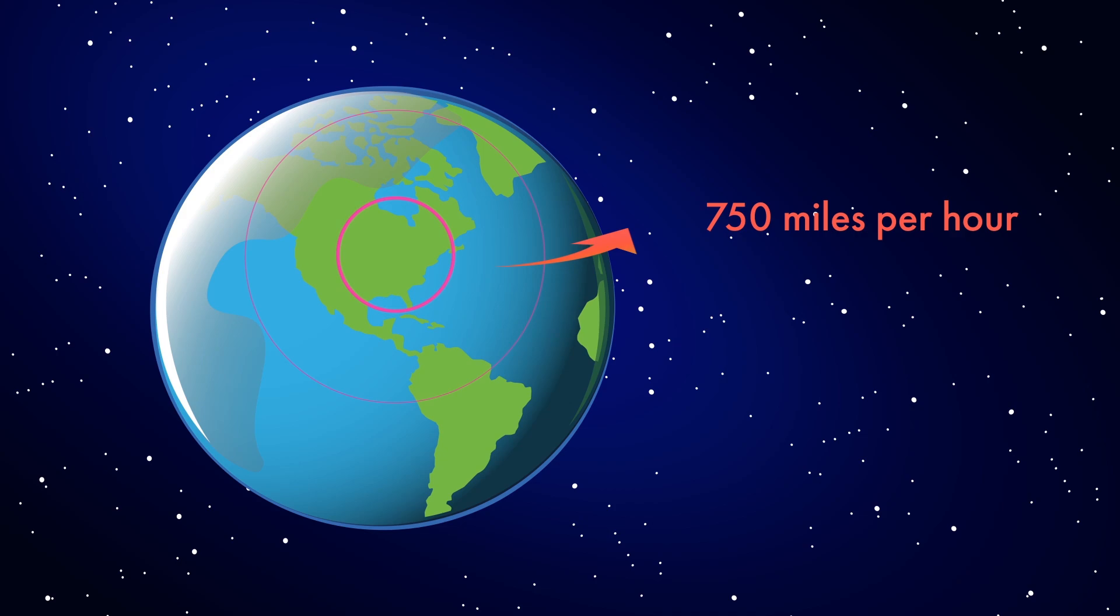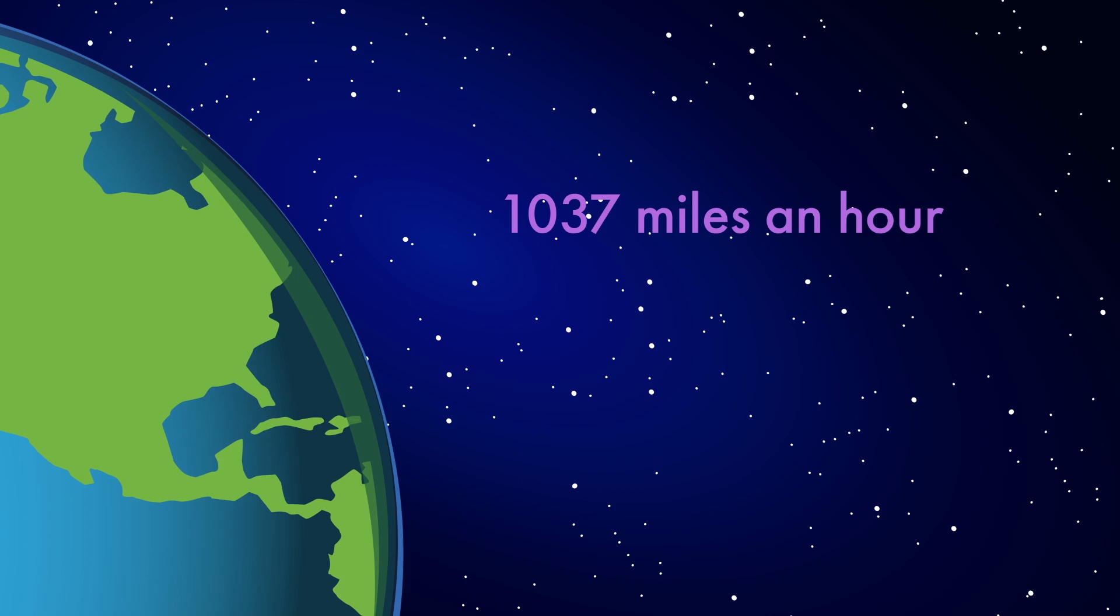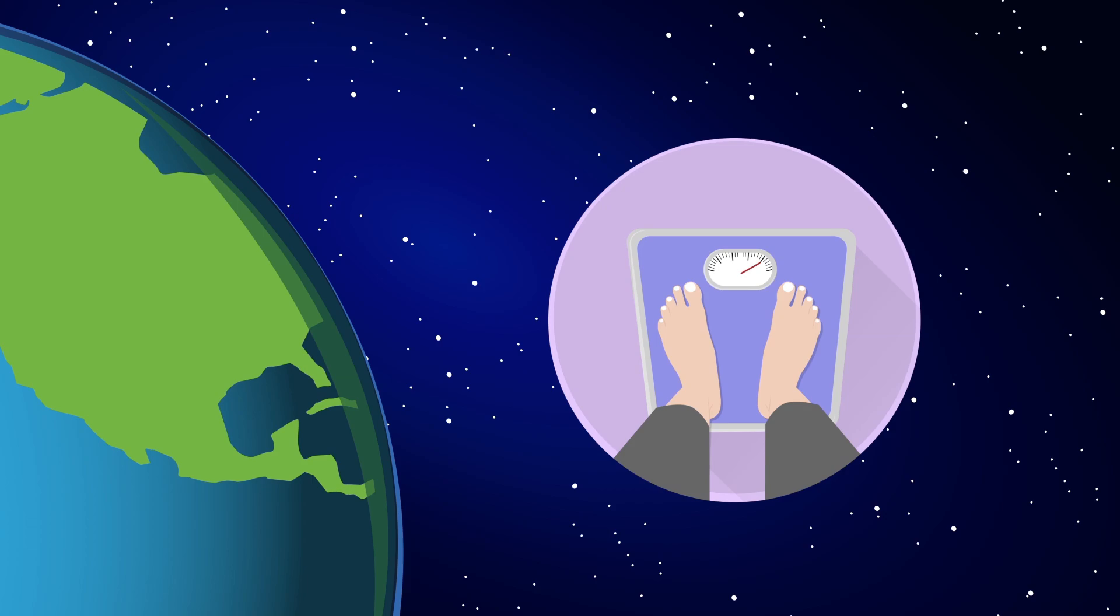Well, if you're somewhere like Chicago, the Earth spins at about 750 miles per hour. So, if you want to experience the Earth rotating at a faster speed, just head down to the equator. The Earth is wider at the equator than it is around Chicago. Therefore, there's more to move. So, at the equator, the Earth spins about 1037 miles an hour.